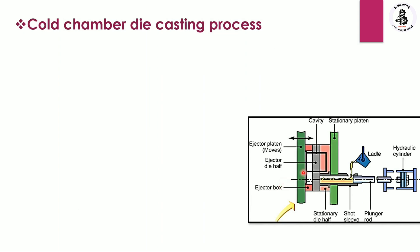Starting with the mechanism of this pressure die casting process — pressure is exerted with the help of a hydraulic cylinder. This hydraulic cylinder is connected with a plunger rod. You can also see the ladle. In the cold chamber die casting process, the heating of the molten metal is done separately, and the molten metal is taken with the help of a ladle into the shot sleeve.